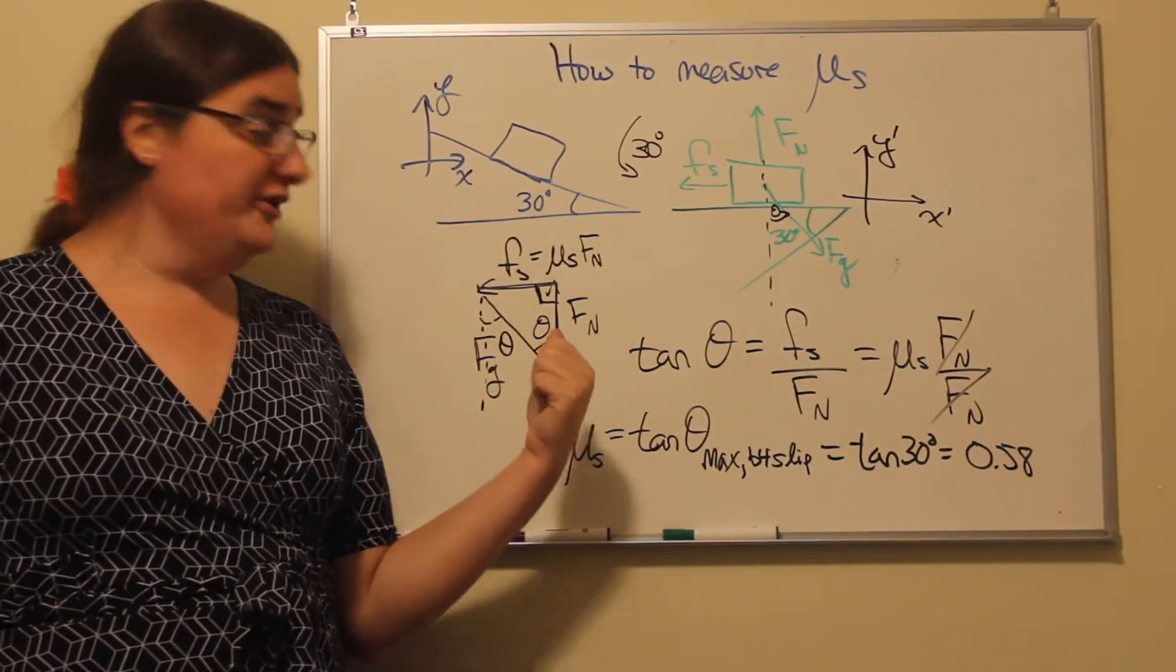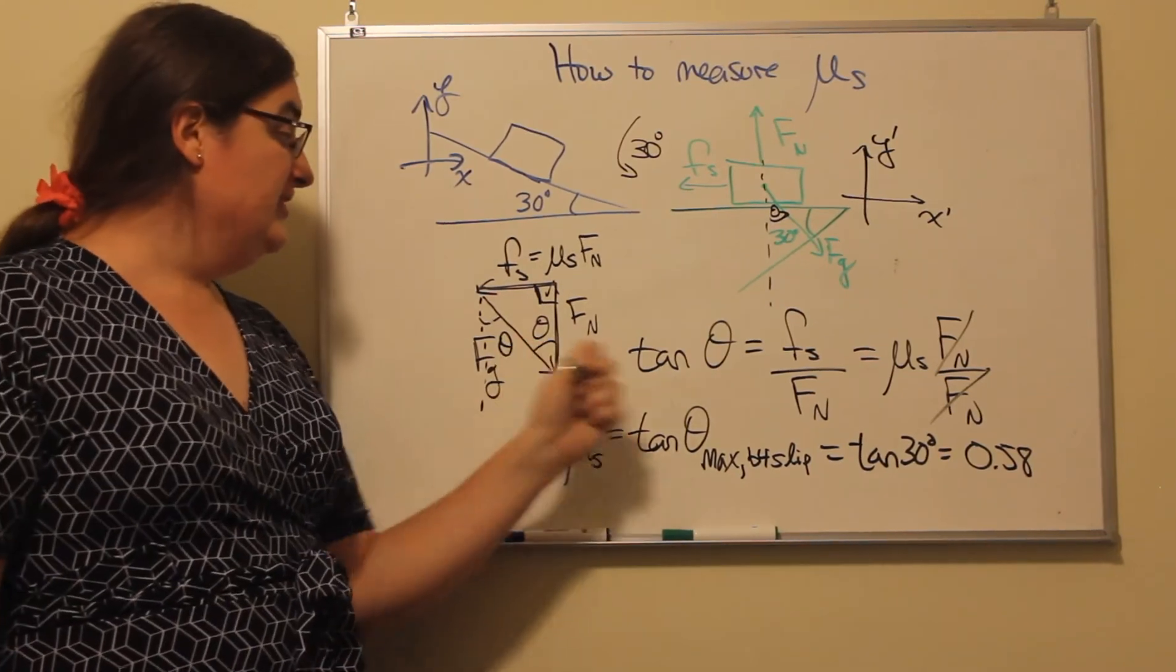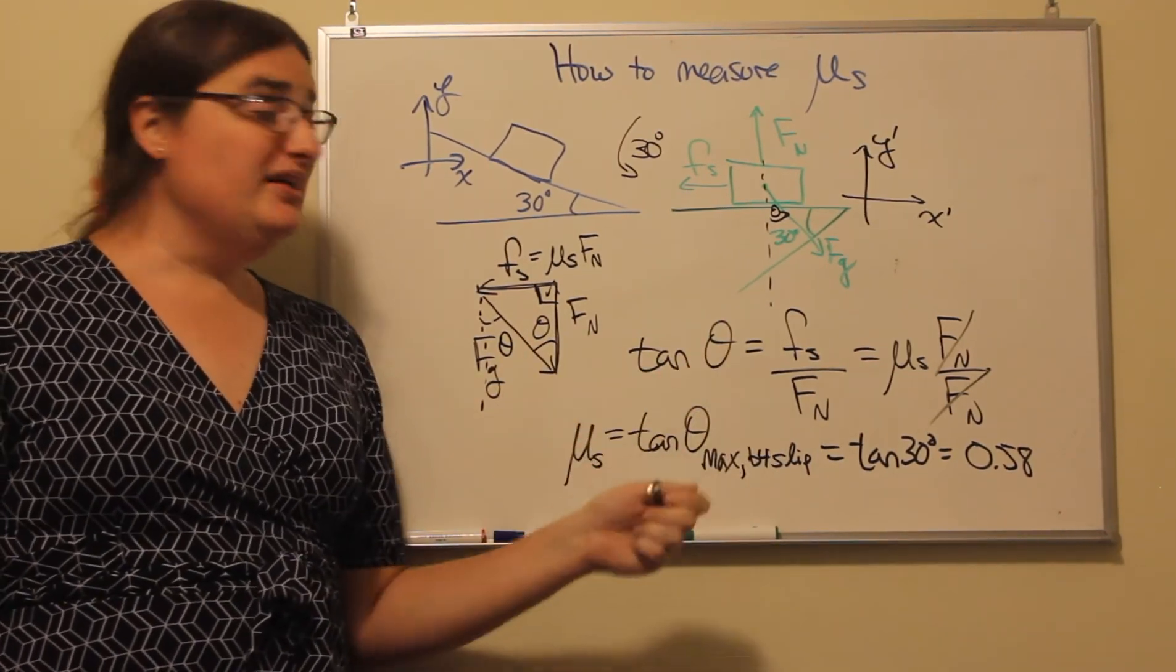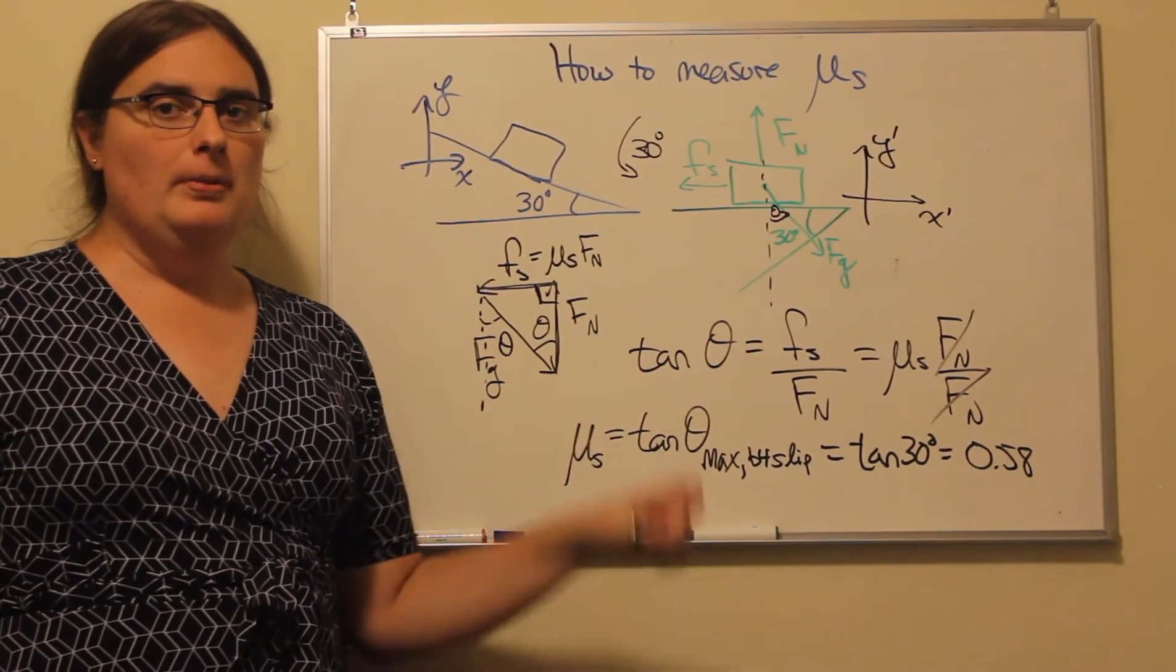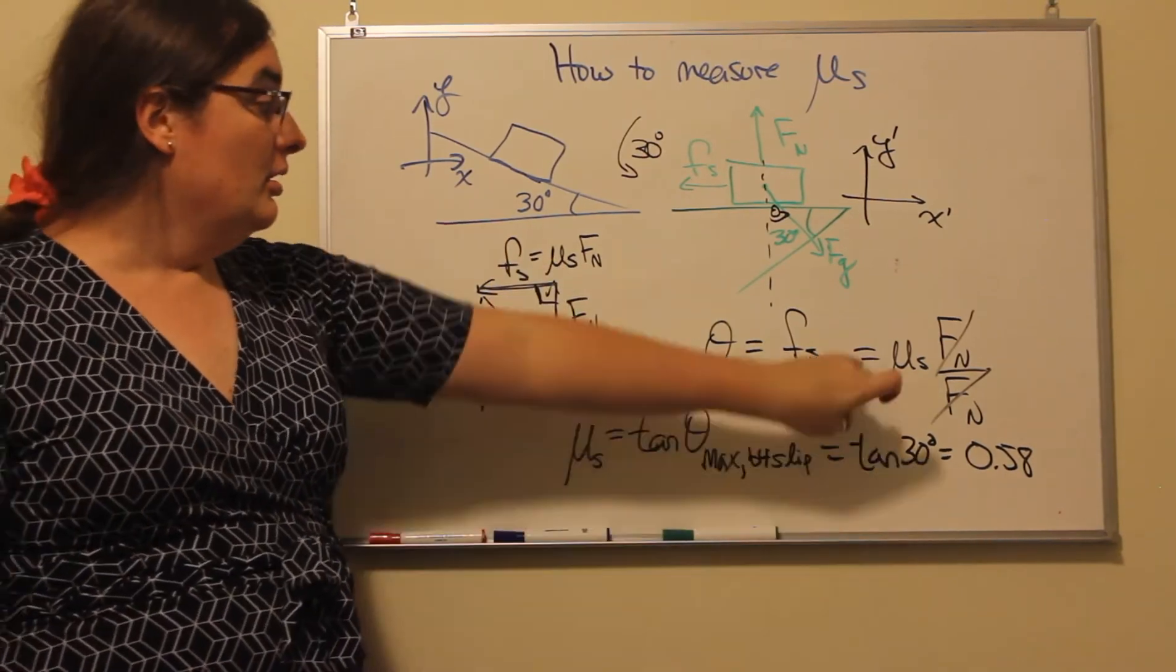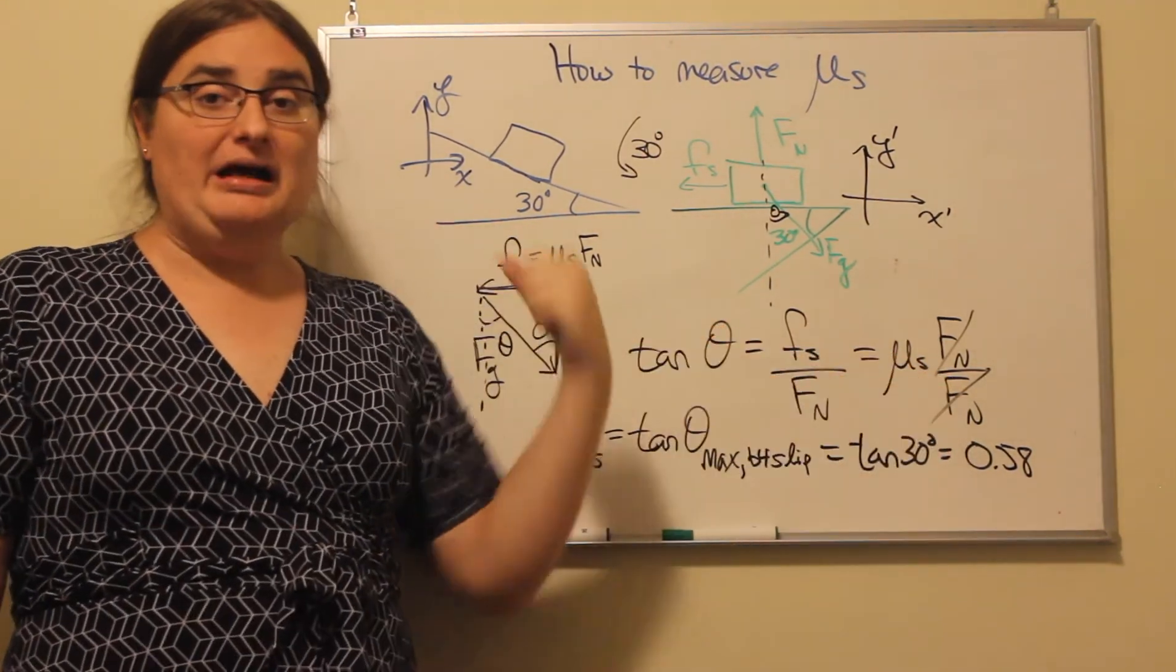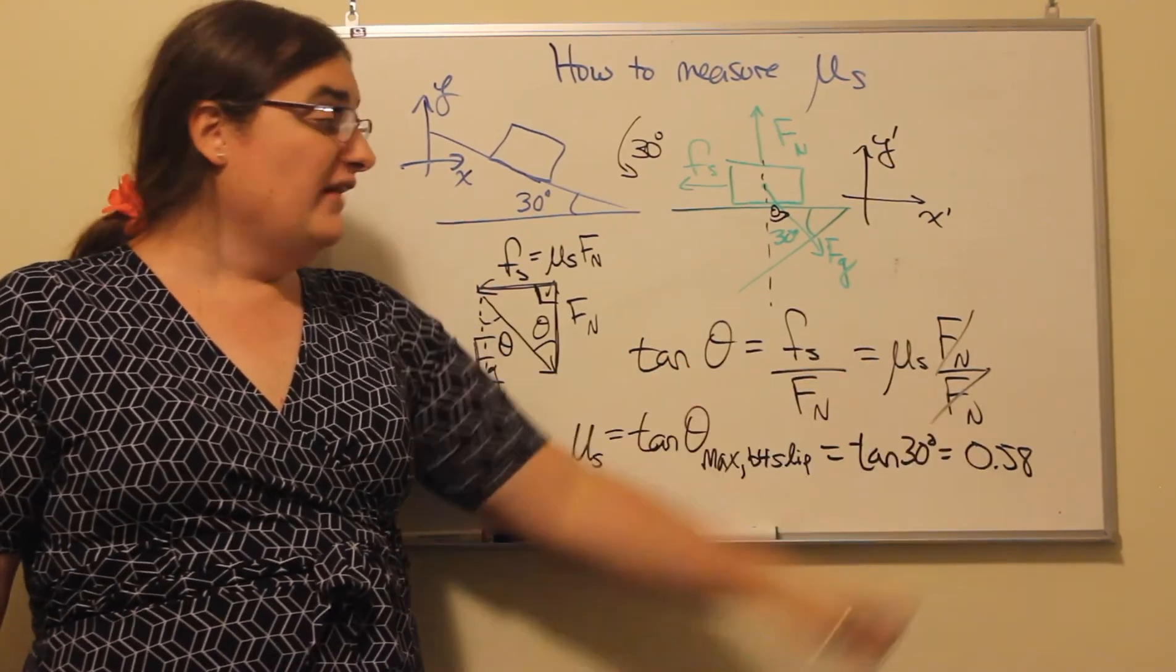So I know my opposite side, the force of static friction, and my adjacent side is the normal force. So the tangent of theta has to be the force of static friction divided by the normal force. But when we're at our maximum force of static friction, our force of static friction would be the coefficient of static friction times the normal force divided by the normal force.